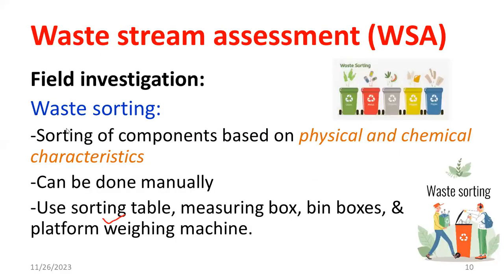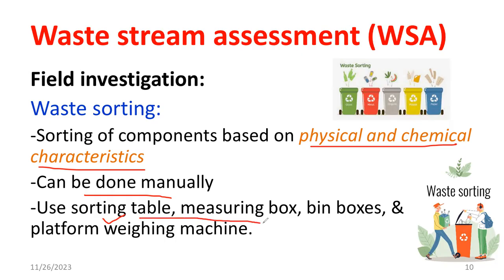During waste sorting, we identify physical and chemical characteristics. Physical characteristics include density, volume, and mass. Chemical characteristics include whether the waste contains protein, carbohydrate, vitamins, etc., and we also check the pH content. Sorting can be done manually or in an automated fashion using sorting tables, measuring boxes, bin boxes, and platform weighing machines. Sorting essentially means segregation — separating waste into different bins for glass, metal, paper, etc.